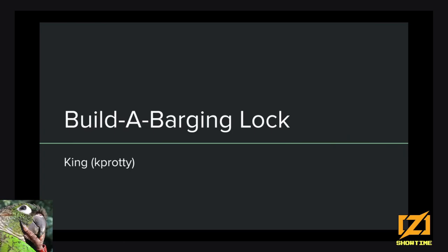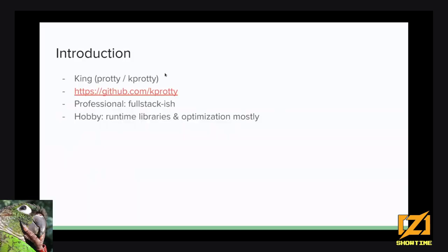This talk is about building a barging lock. My name is King, or Kprody801works, and I have a GitHub where I just post all my unfinished projects. Professionally, I'm a full stack developer — front-end, back-end, whatever. For hobby, I like to optimize stuff, mostly runtime libraries — anything from mutexes to allocators to hash maps, whatever.